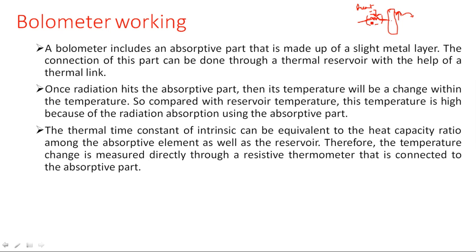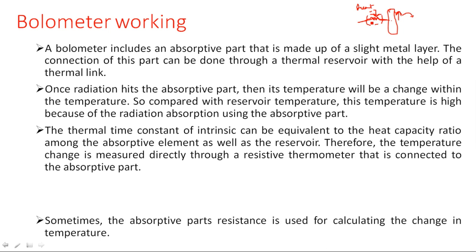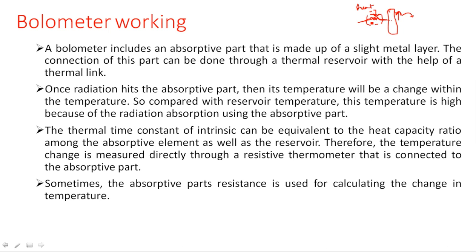The thermal time constant can be equivalent to the heat capacity ratio between the absorptive element and the reservoir. The reservoir is the place where we have the normal temperature — it compares with the normal temperature and detects that the temperature of the detecting element is more compared to the original internal temperature. Therefore, the temperature change is measured directly through a resistive thermometer connected to the absorptive part. Sometimes the absorptive part resistance is used for calculating the change in temperature, since temperature changes can be measured using resistance.